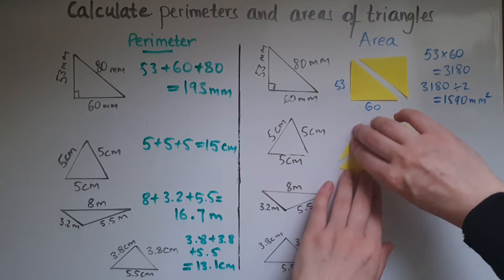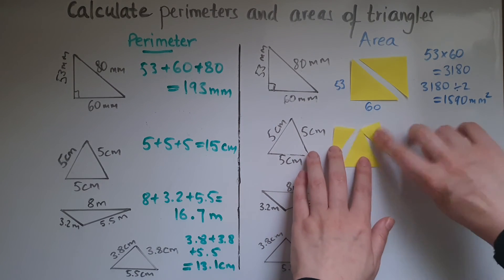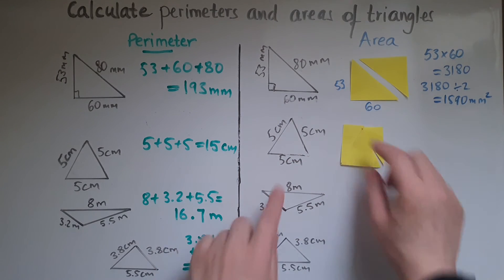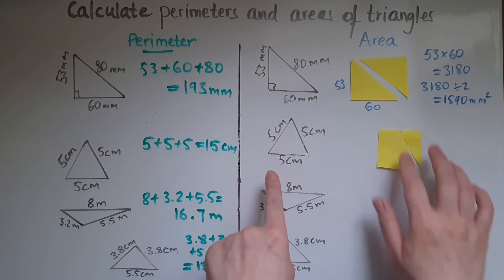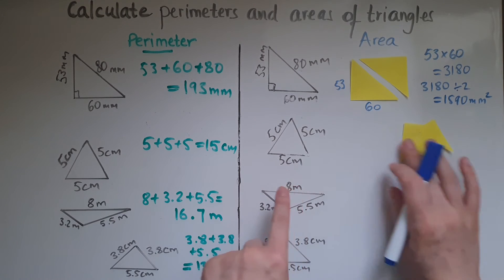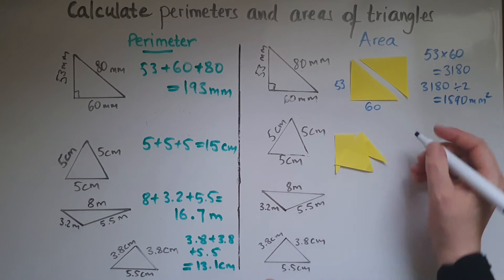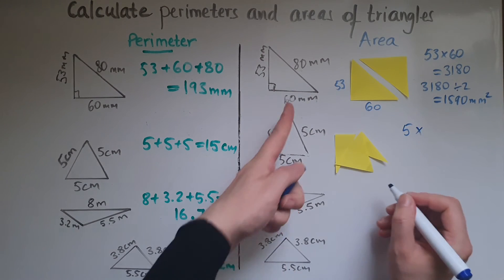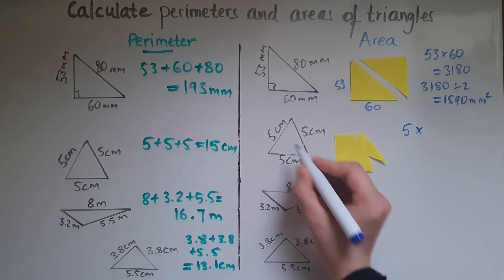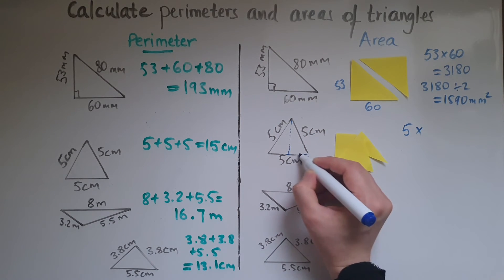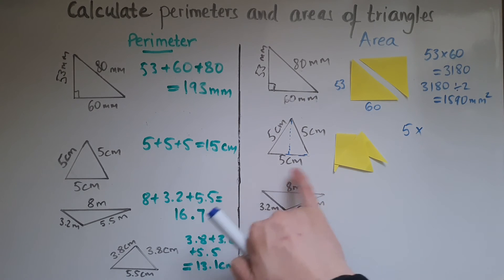So the same thing again, you'd have to get the length which is equal to 5 times the height. So this is really important. This is not the height. This is not the height. It's this one here which is perpendicular to the base or what I called the length because it related to the rectangle.